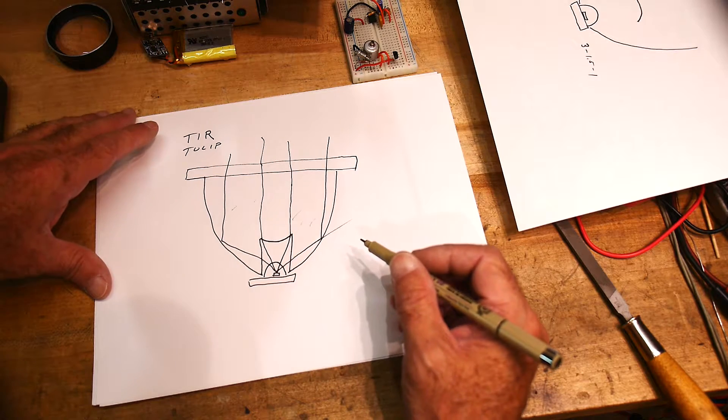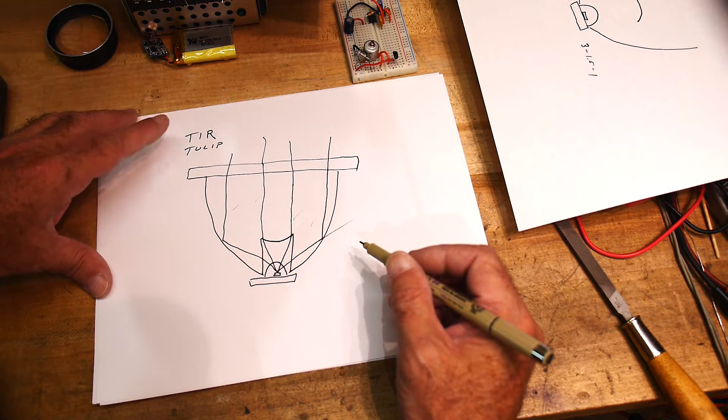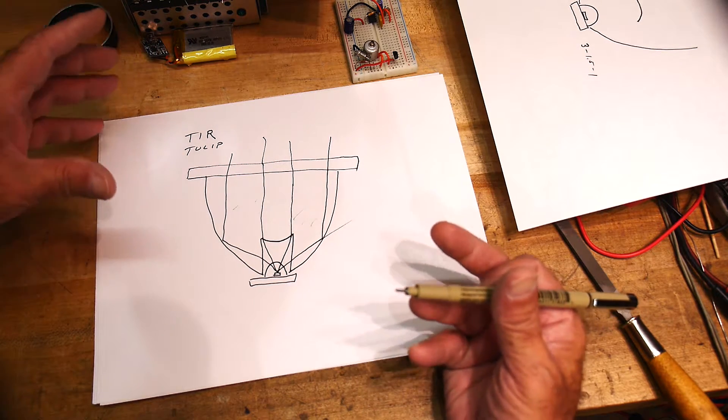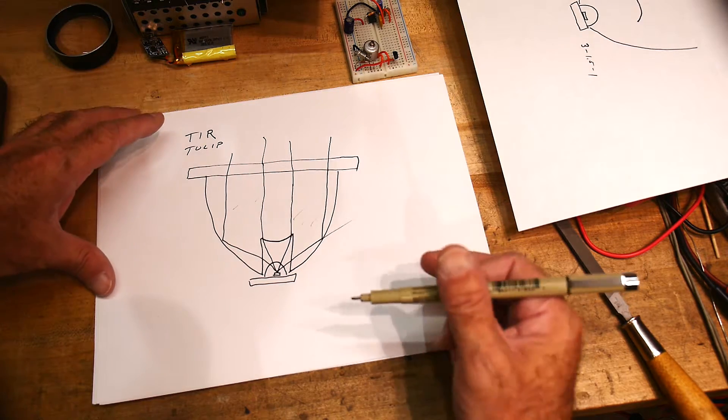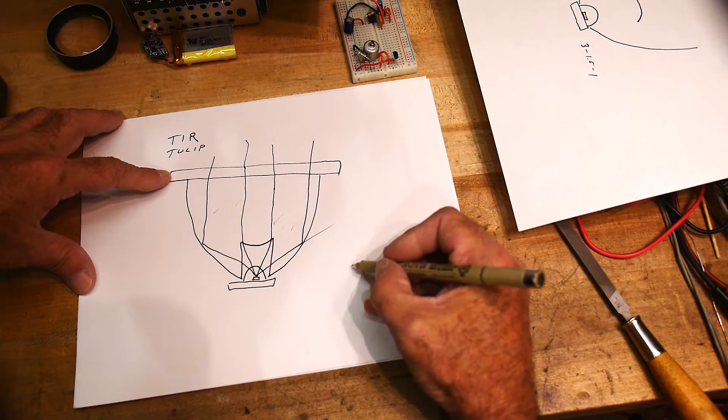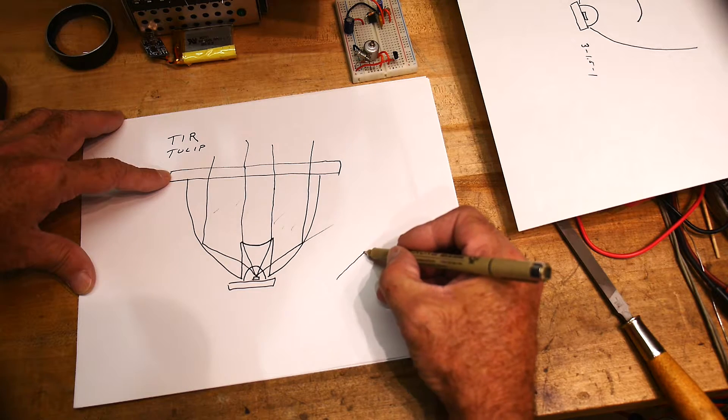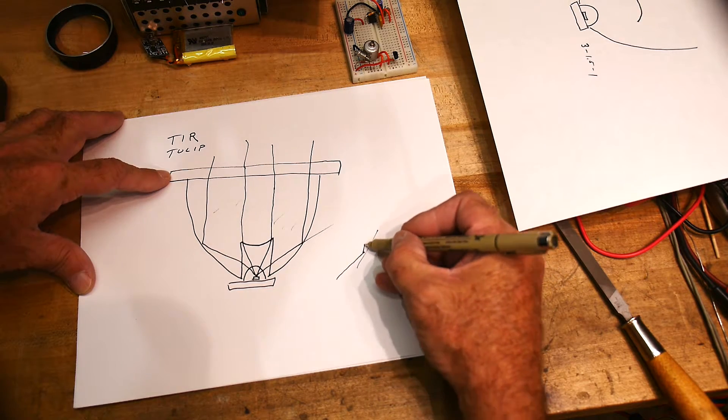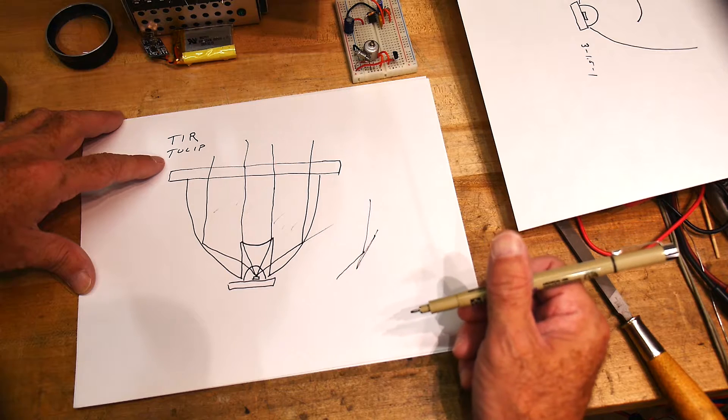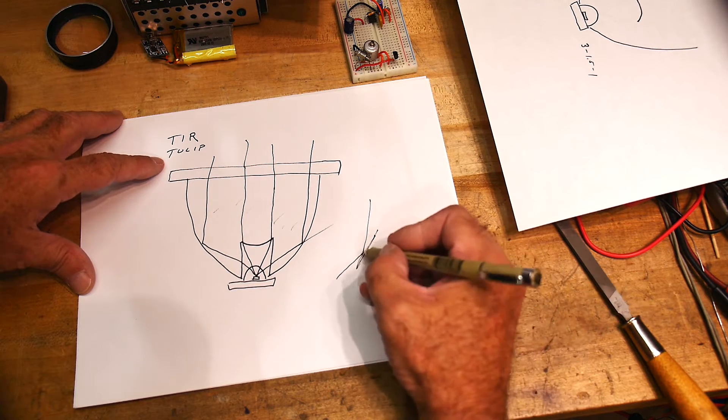So you have to design this thing with all those angles in mind. Now this total internal reflection is a very strange property in physics. If you have a ray that strikes a mirror, not 100% of the light gets reflected.